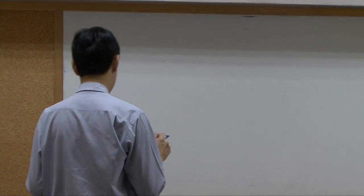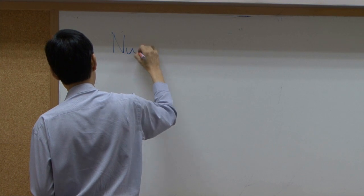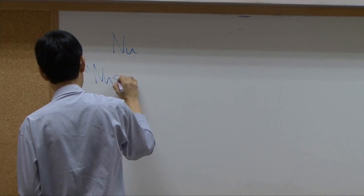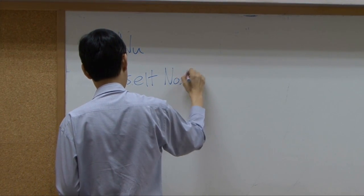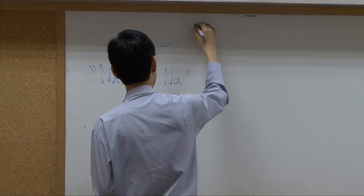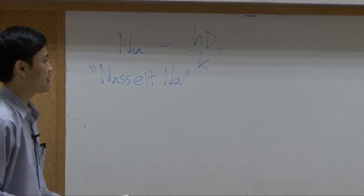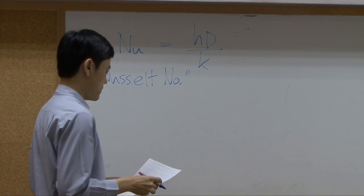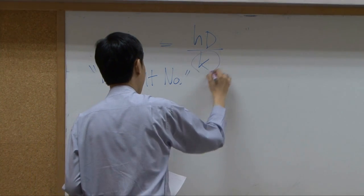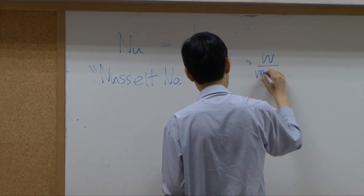That dimensionless number, associated with heat transfer coefficient, is called NU, or Nusselt number. Nusselt number here is defined based on heat transfer coefficient, times diameter, divided by conductivity. The K here is thermal conductivity as a unit of watt per meter Kelvin.